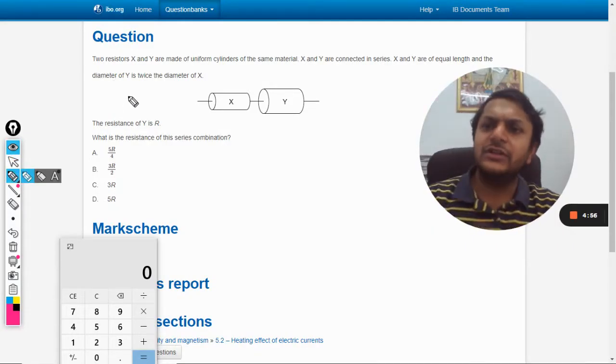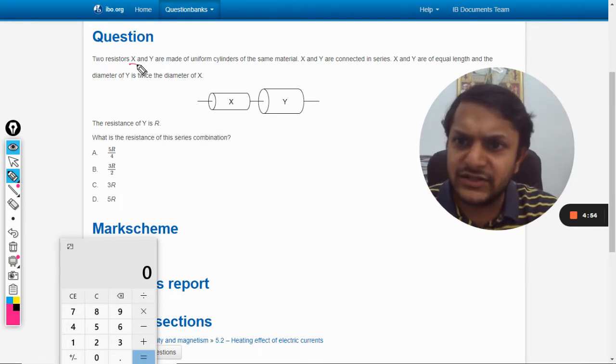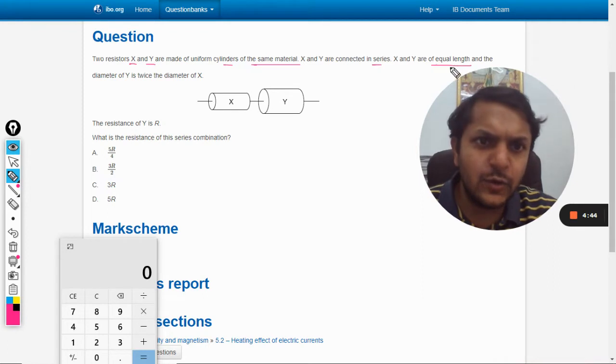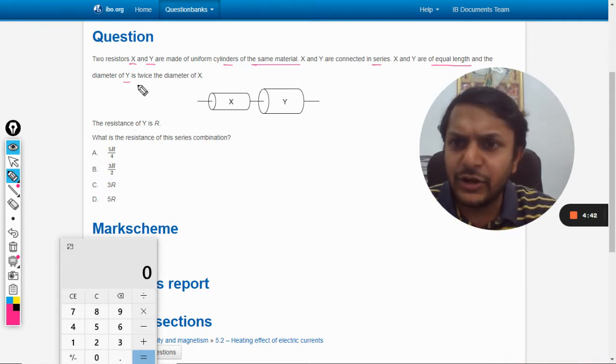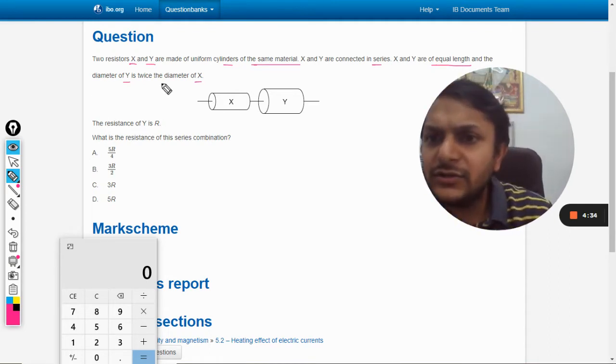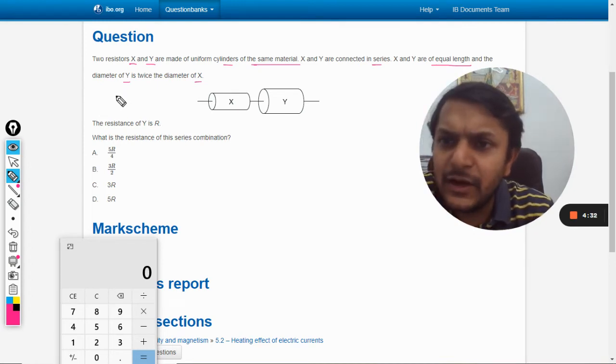In this question, two resistors x and y are made of uniform cylinders of the same material. X and y are connected in series and are of equal length. The diameter of y is twice the diameter of x, which means the radius is also twice.